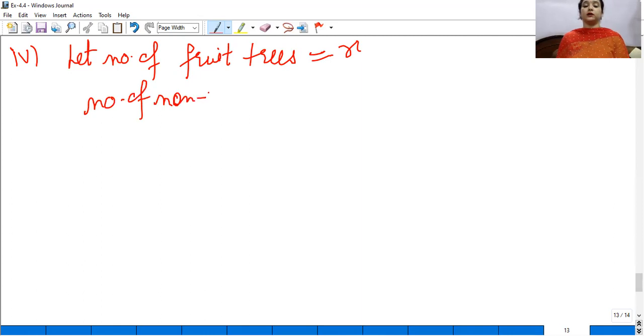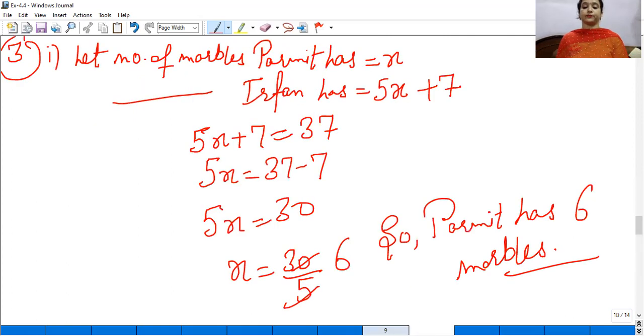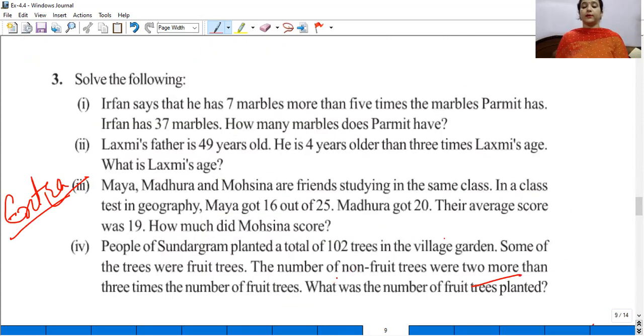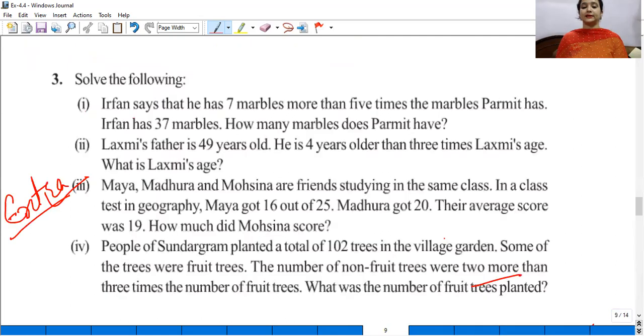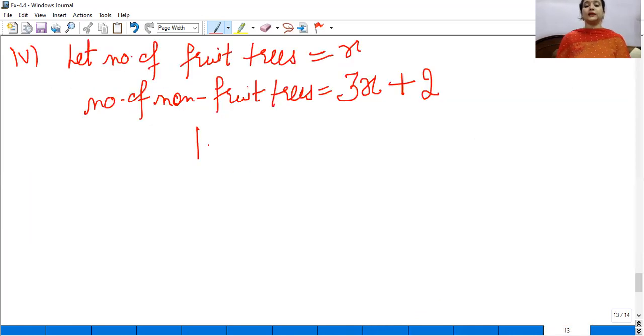Now we don't know about non-fruit trees, but we have some given information. What is given? According to that, we'll make an equation. Number of non-fruit trees.